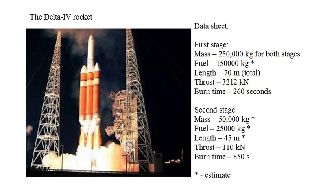For the second stage, the mass is 50,000 kilograms — that's a guess. Fuel is 25,000 kilograms — also a guess — and the length is 45 meters; these are all guesses. The thrust is 110 kilonewtons, that's accurate, and the burn time is 150 seconds, that's also accurate.